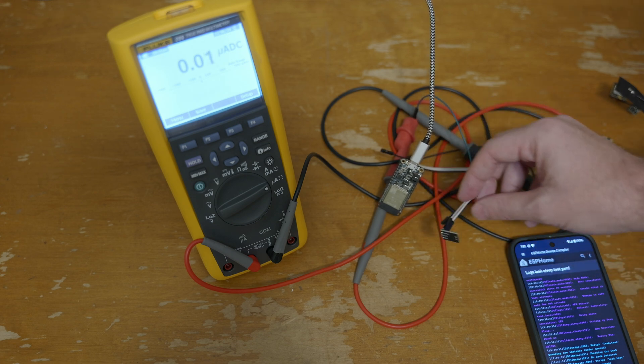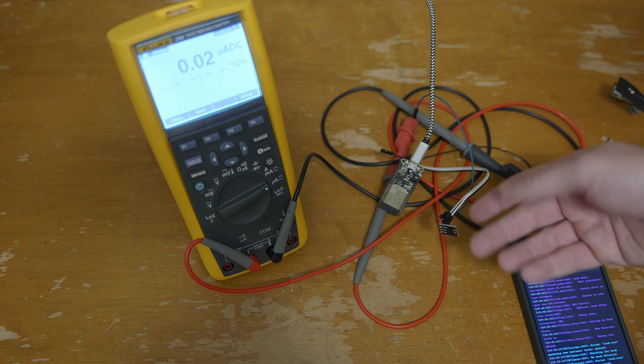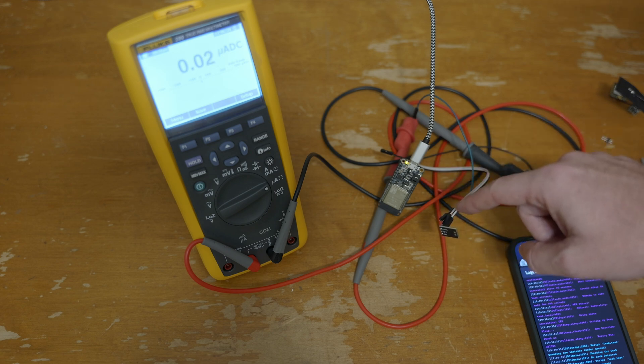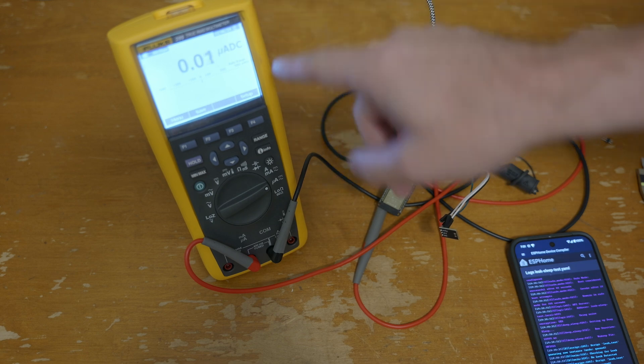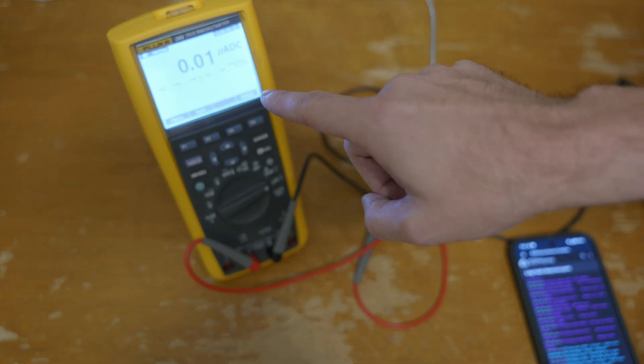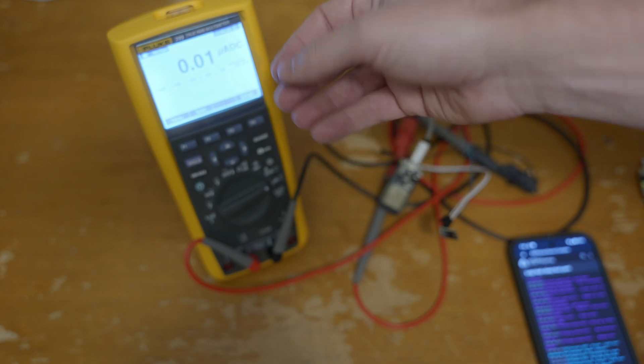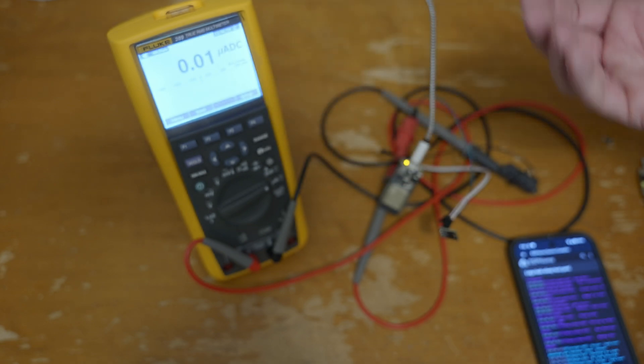I've got it wired in. Here's the leak detector sensor. And in between the ground of the sensor and the board, I've got my fluke meter set up to read in microamps. So, currently, it is reading 0.01 microamps.